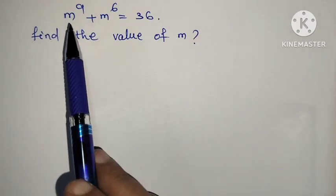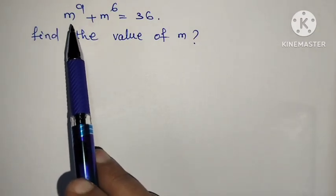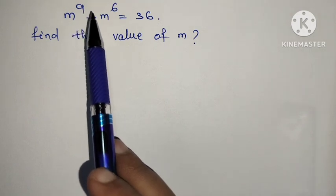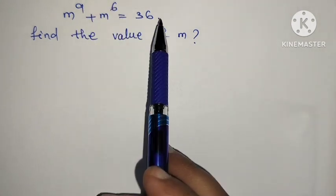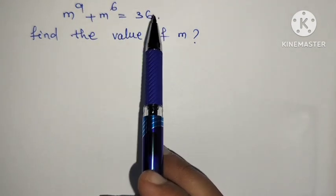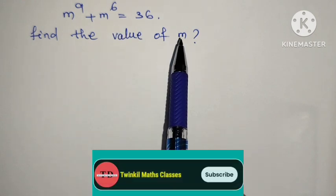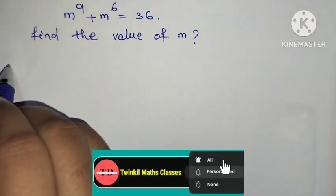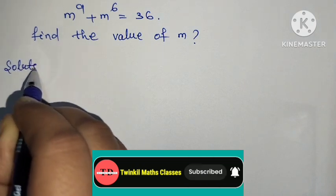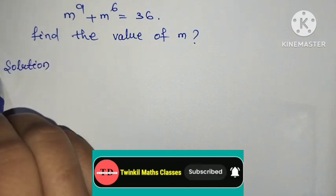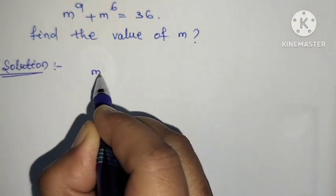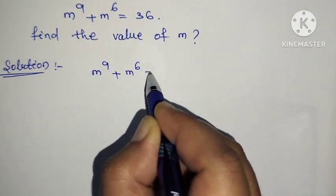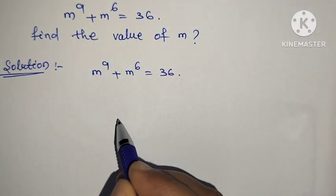Hello everyone. Today we solve m to the power 9 plus m to the power 6 is equal to 36, then find the value of m. Let's check the solution. m to the power 9 plus m to the power 6 is equal to 36.